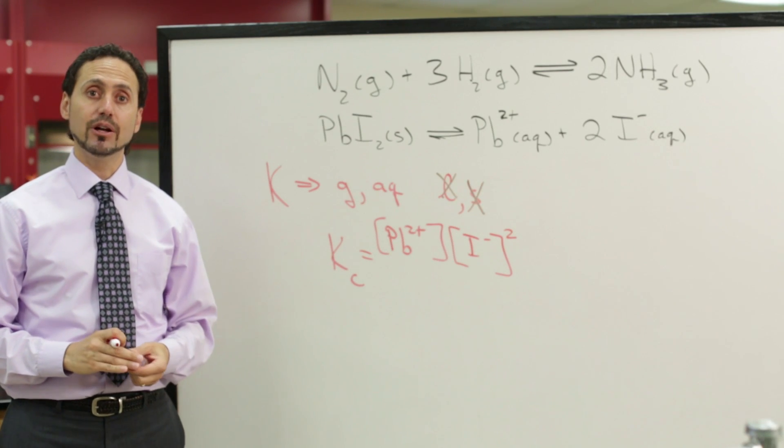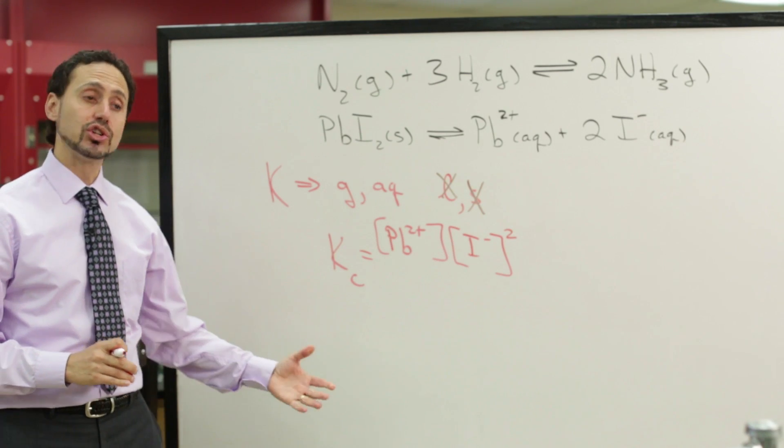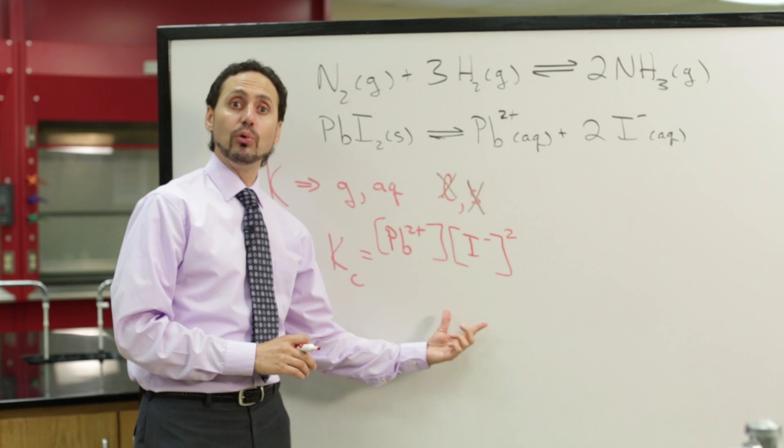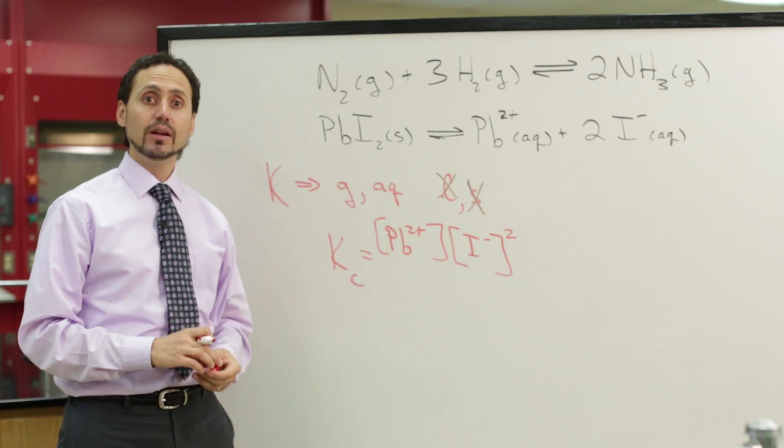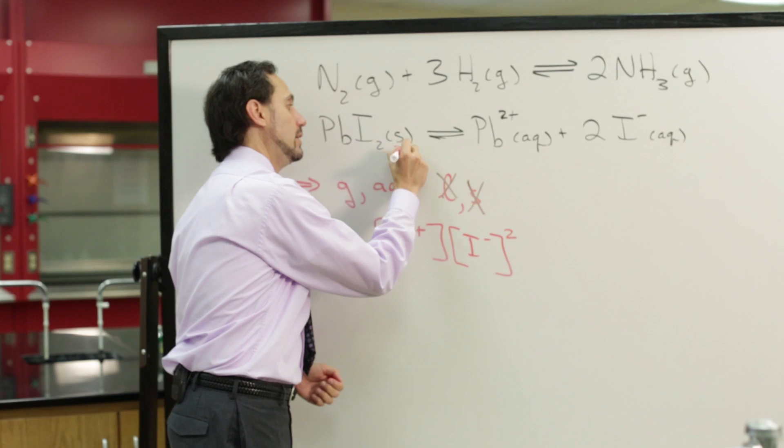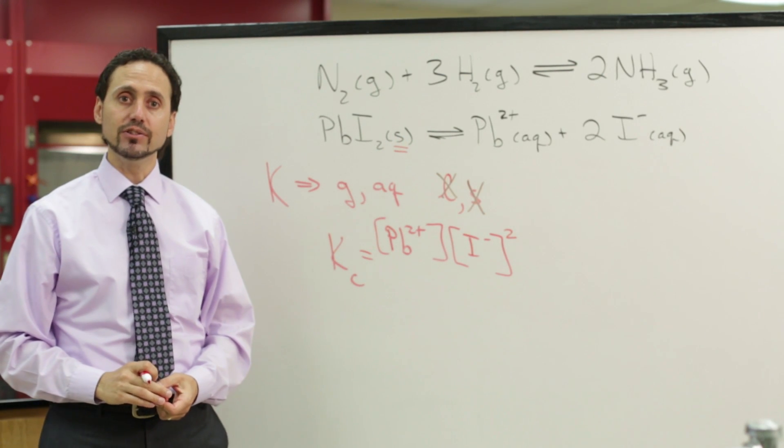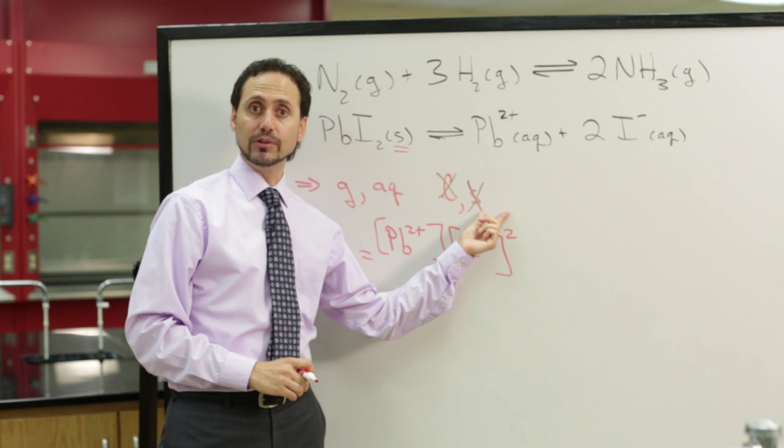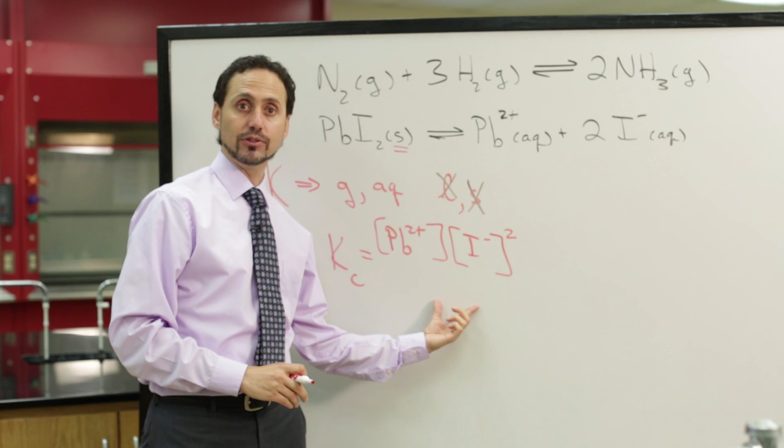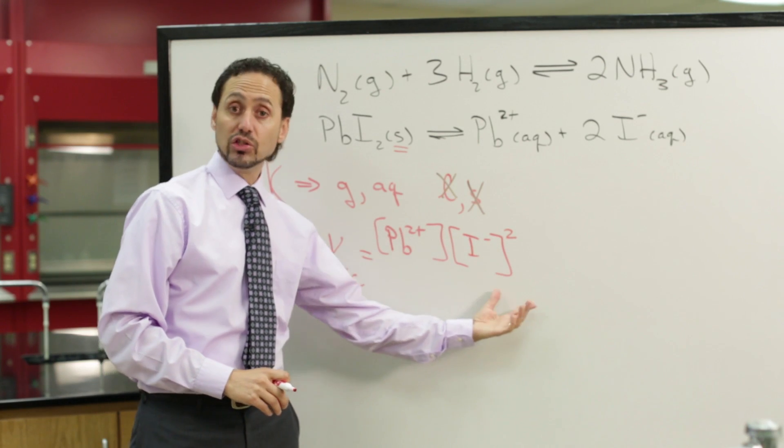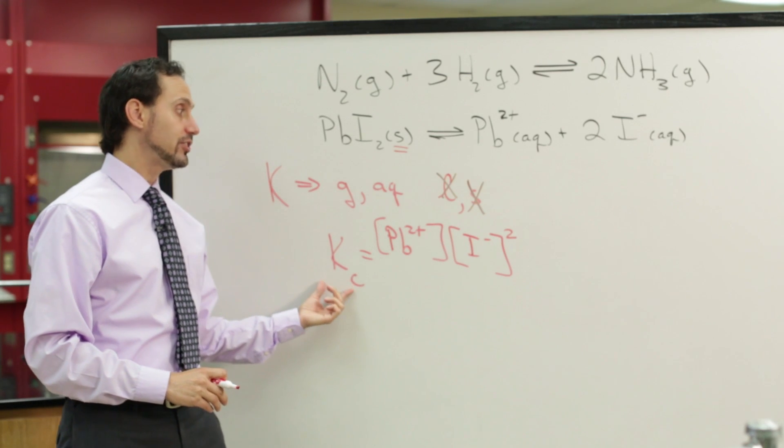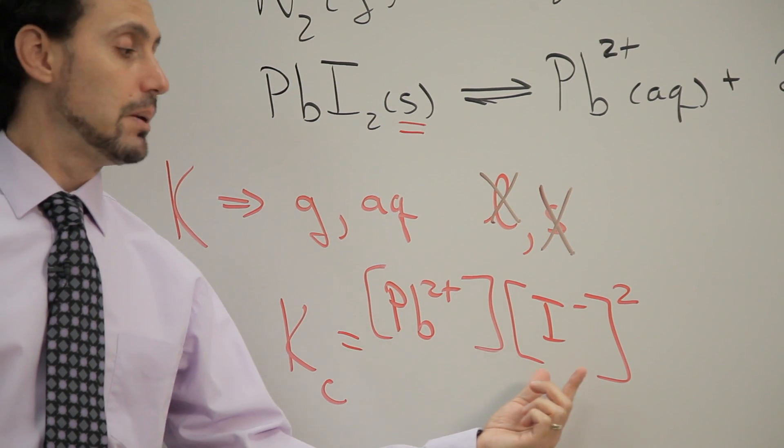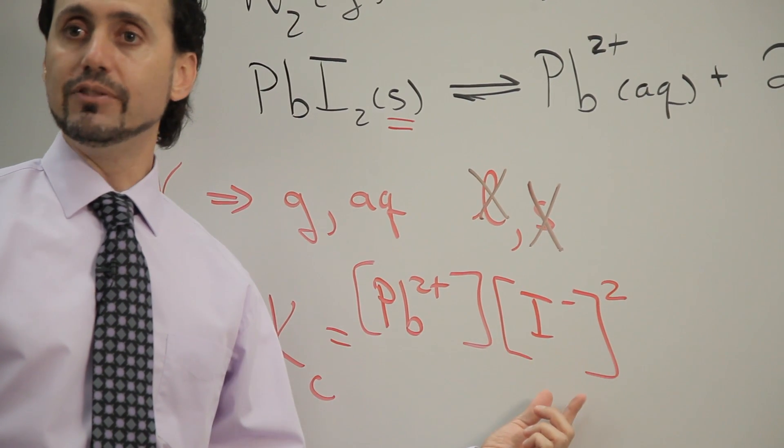What else do we include in the equilibrium constant expression? Usually we would write the line and have the denominator. But what is different about this equilibrium? In this equilibrium, the reactant is in the solid phase. And as we just stated, we never include reactants or products that are in the solid phase in the equilibrium constant expression. So in this case, there is no denominator. The equilibrium constant expression for this equilibrium is simply the concentration of the lead 2 plus ion multiplied by the square of the iodide ion.